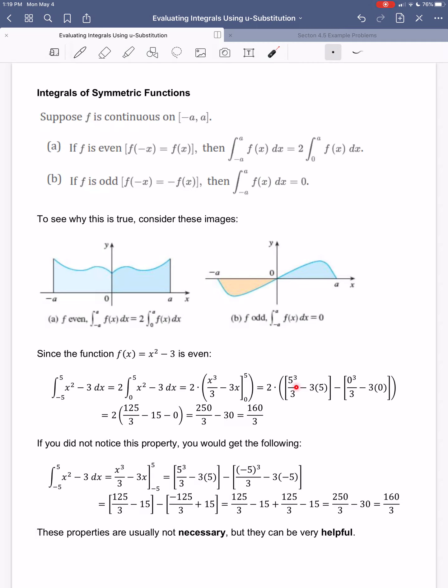If you didn't notice this property, you could still do the integral from negative 5 to 5. The thing is, this second bracket is harder to do than this was up here. We have to plug in this negative 5 and deal with all of that. So these properties up here for even and odd functions, they're usually not really necessary. It's not like you have to use them, but if you notice it, they can be helpful.